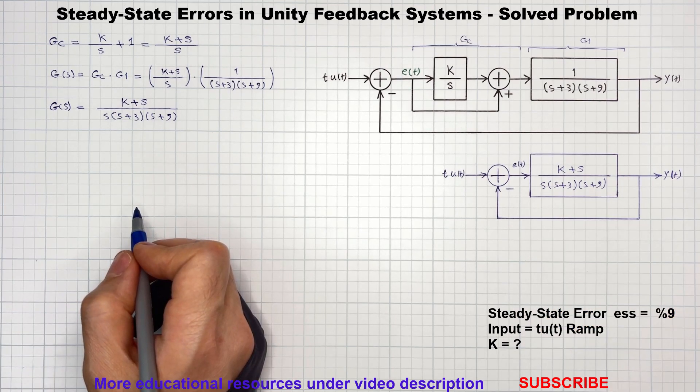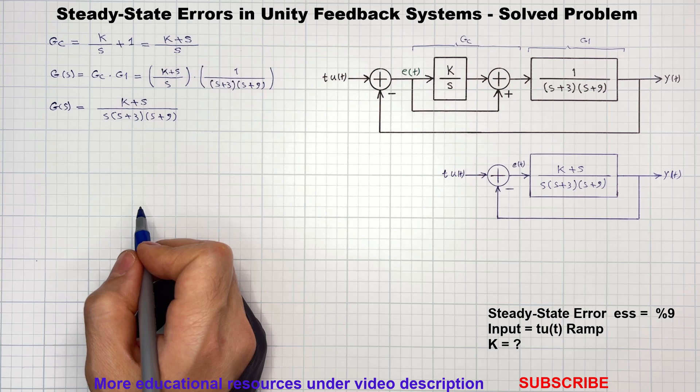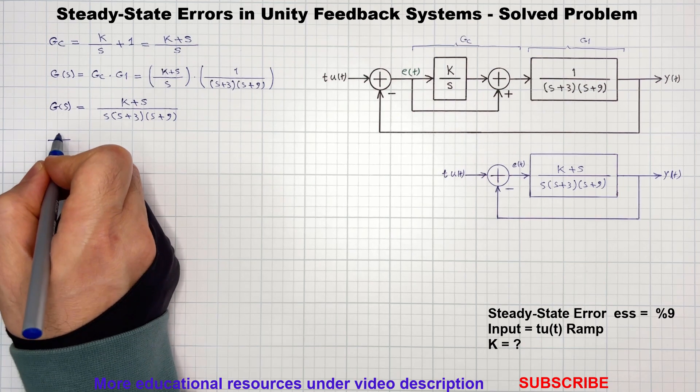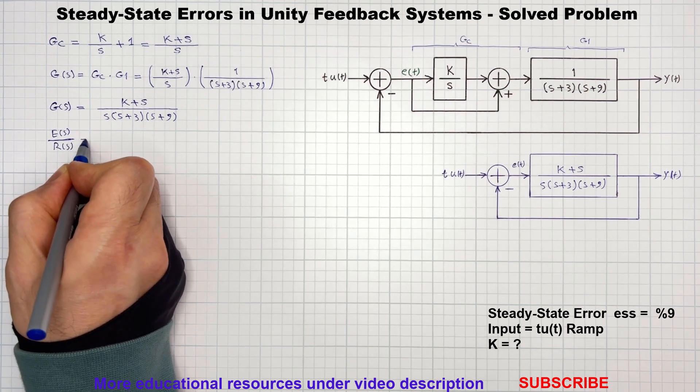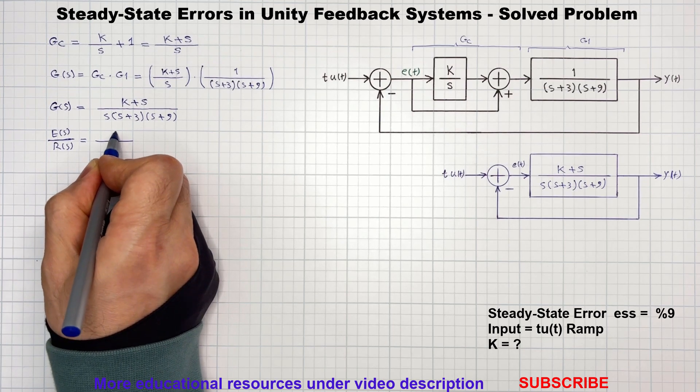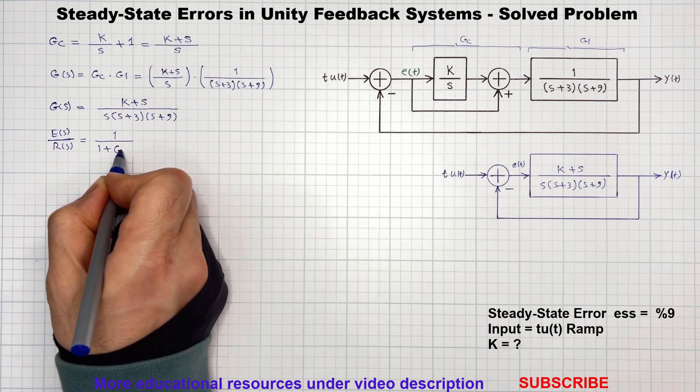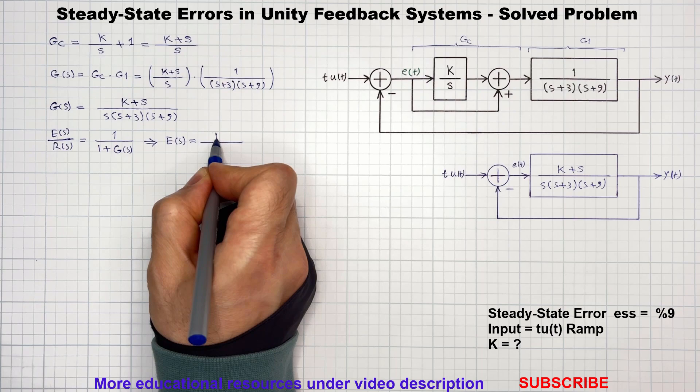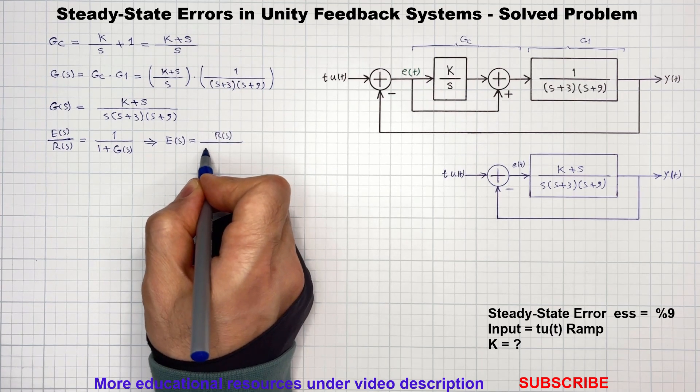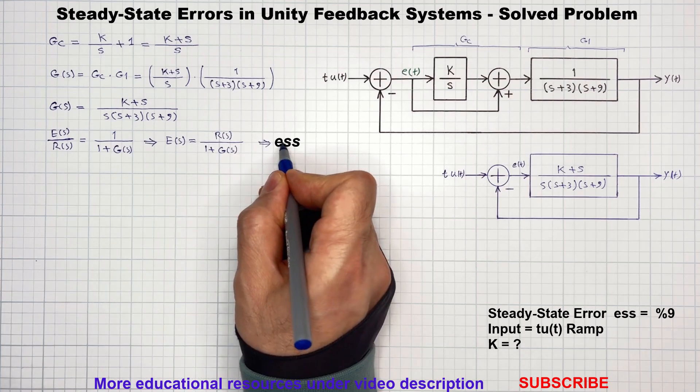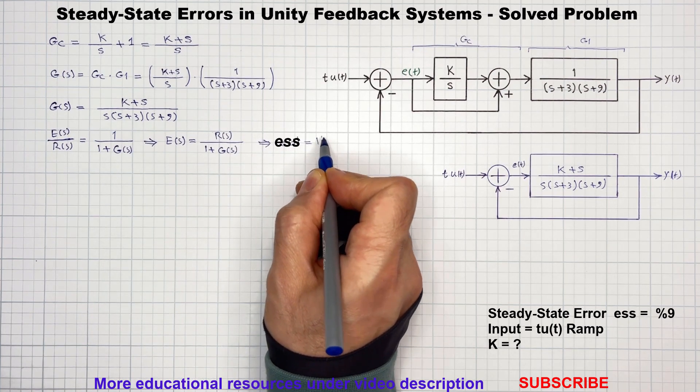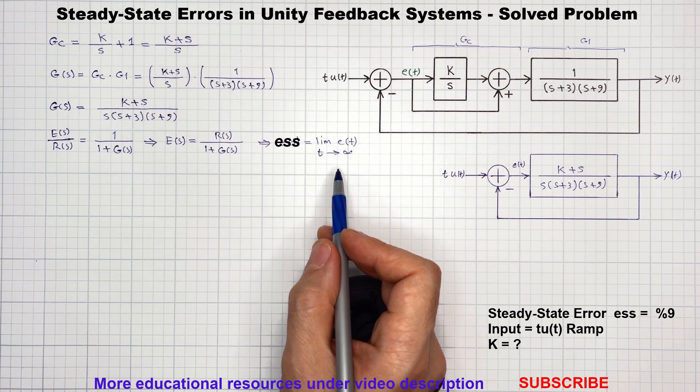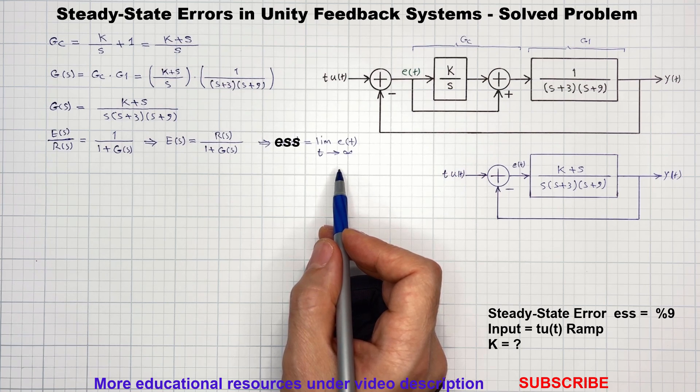The steady state error for all unity feedback systems with a given input can be calculated from the following formula. And by using the final value theorem in Laplace domain, we can rewrite this as shown.